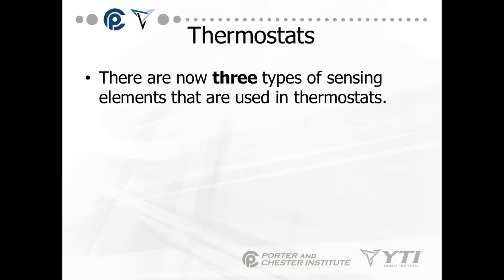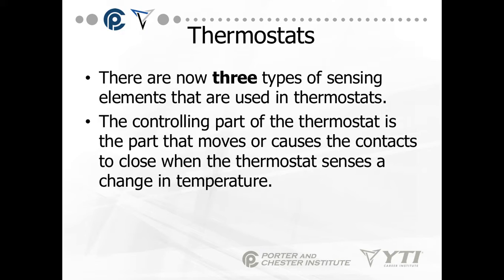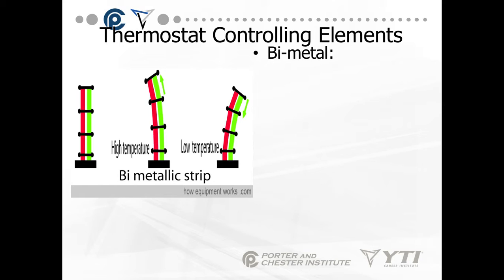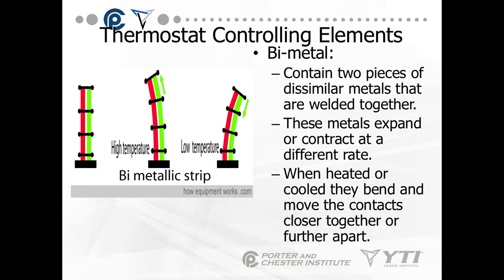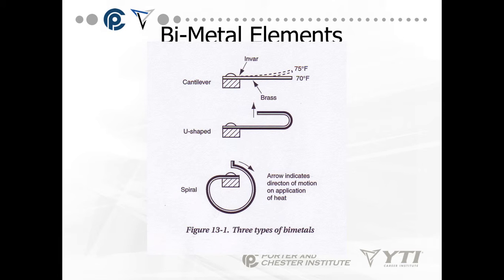There are three types of sensing elements used in thermostats. The controlling part moves or causes the contacts to close when the thermostat senses a change in temperature. The first is the bimetal — a bimetal strip is two dissimilar metals welded together. The different metals expand and contract at different rates, so the whole thing shifts position based on temperature. The bimetal elements you'll most likely see are: cantilever (like a diving board that goes up or down), U-shaped (expands and contracts), and spiral (moves the entire spiral making it bigger or smaller).